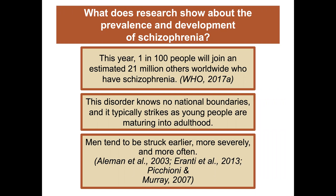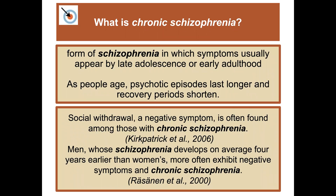One in 100 people will join an estimated 21 million others worldwide who have schizophrenia. The disorder knows no national boundaries and typically strikes as young people are maturing into adulthood. Men tend to be struck earlier, more severely, and more often. Chronic schizophrenia is a form in which symptoms usually appear by late adolescence or early adulthood. As people age, psychotic episodes last longer and recovery periods shorten. Social withdrawal, a negative symptom, is often found among those with chronic schizophrenia. Men's schizophrenia develops on average four years earlier than women's, and men more often exhibit negative and chronic schizophrenia.